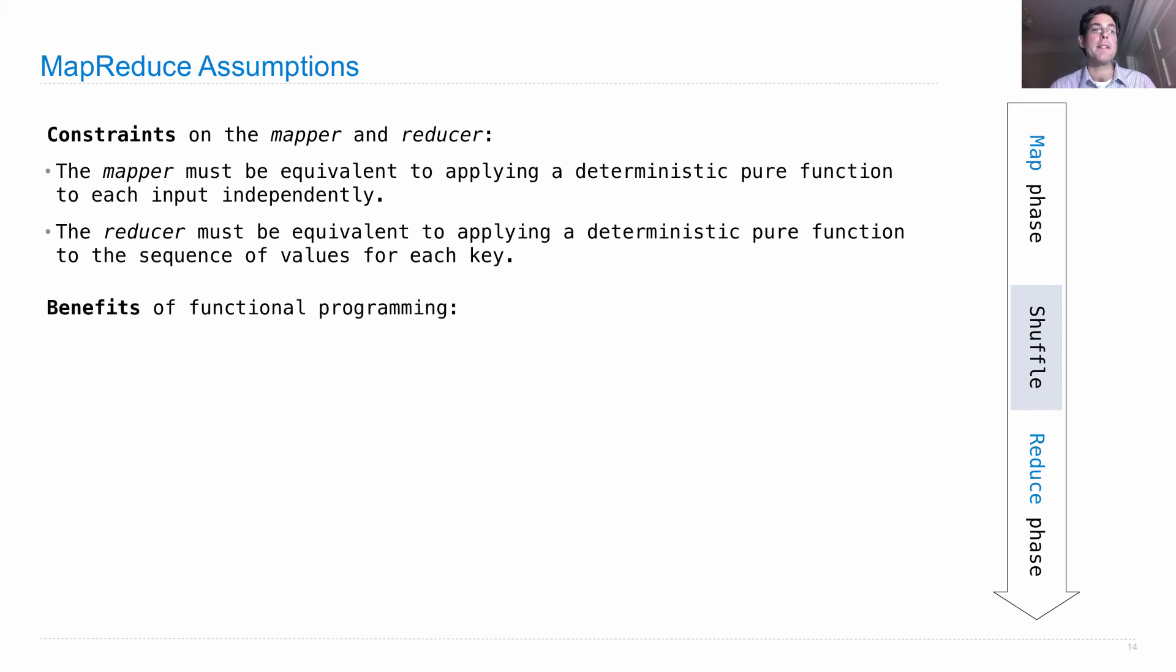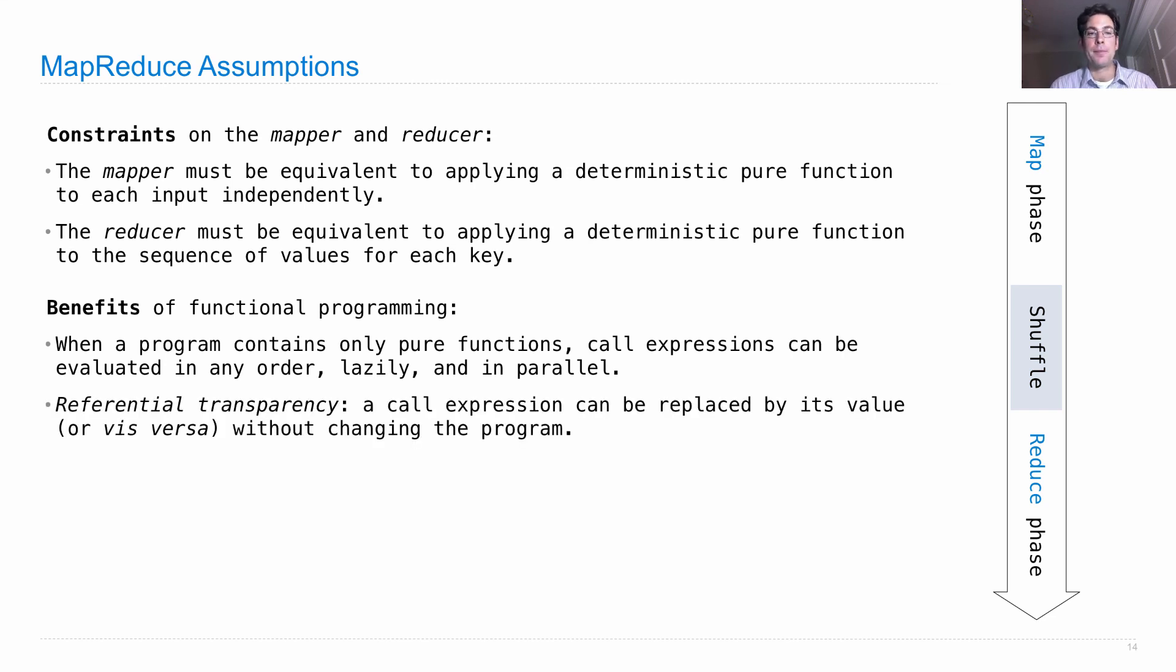The benefits of using these functional programming constraints is that when a program contains only pure functions, call expressions can be evaluated in any order, they can be evaluated lazily, or even in parallel. And we get referential transparency.